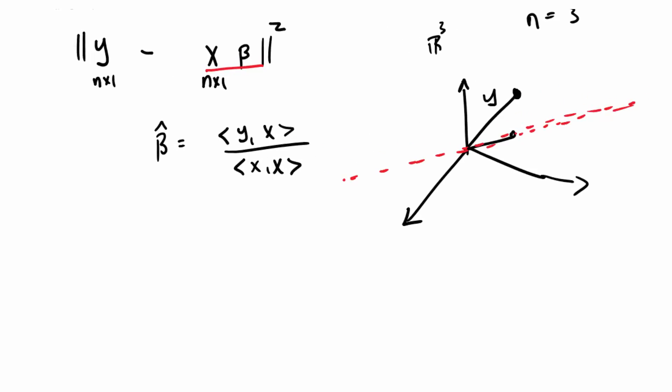And so what is beta hat? This quantity right here, that is the multiplier times x that we have to get to to get to the point beta hat times x, that is the projection of y, the minimizer of the distance between y and the collection of x betas, the projection of y onto this red line.